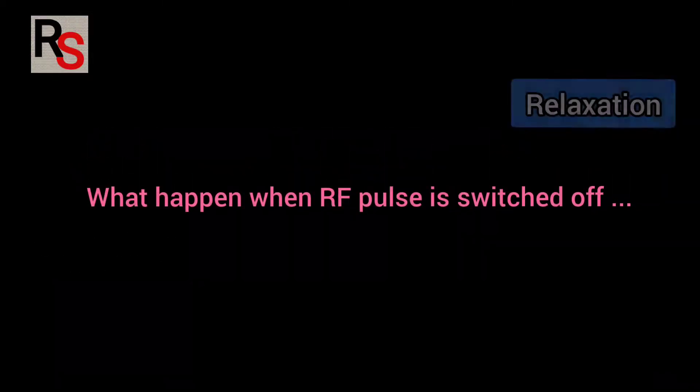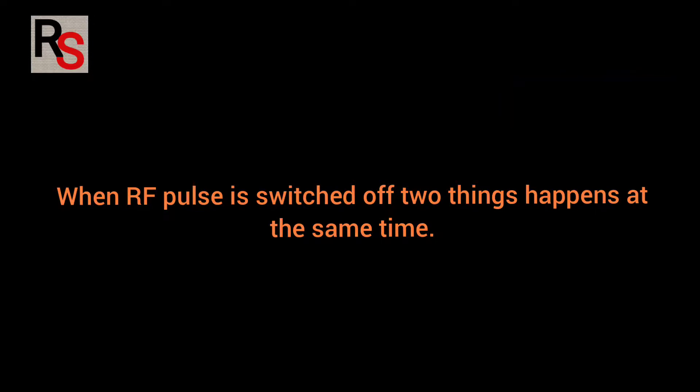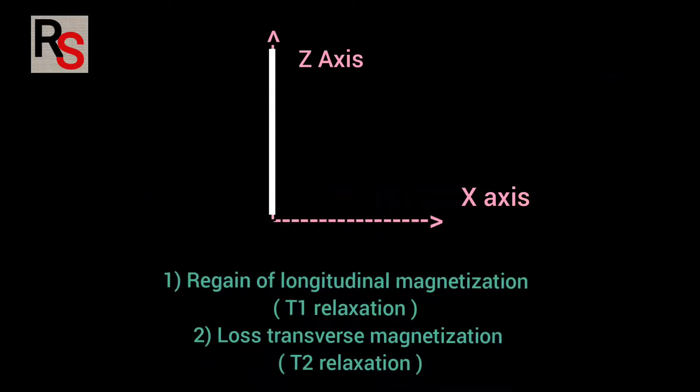Now what happens when RF pulse is switched off? When RF pulse is switched off two things happen at the same time: first regain of longitudinal magnetization T1 relaxation and loss of transverse magnetization T2 relaxation.